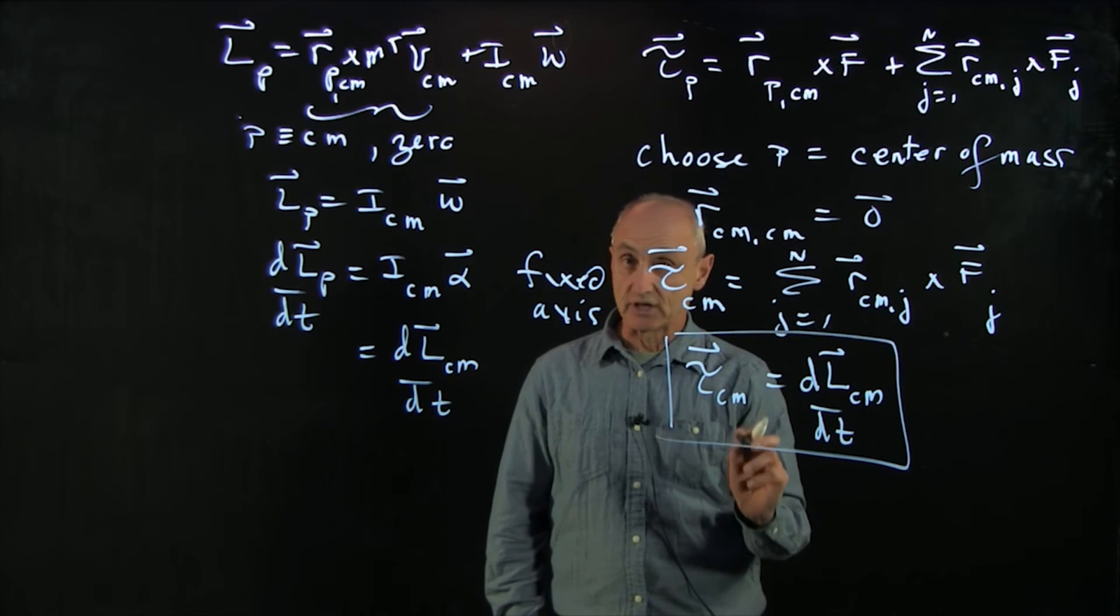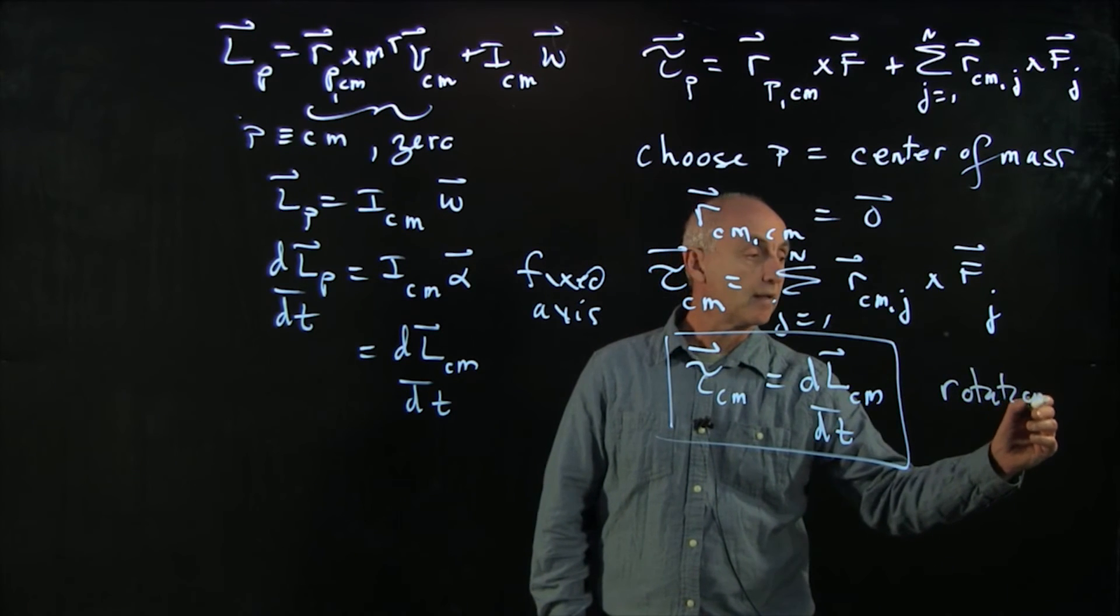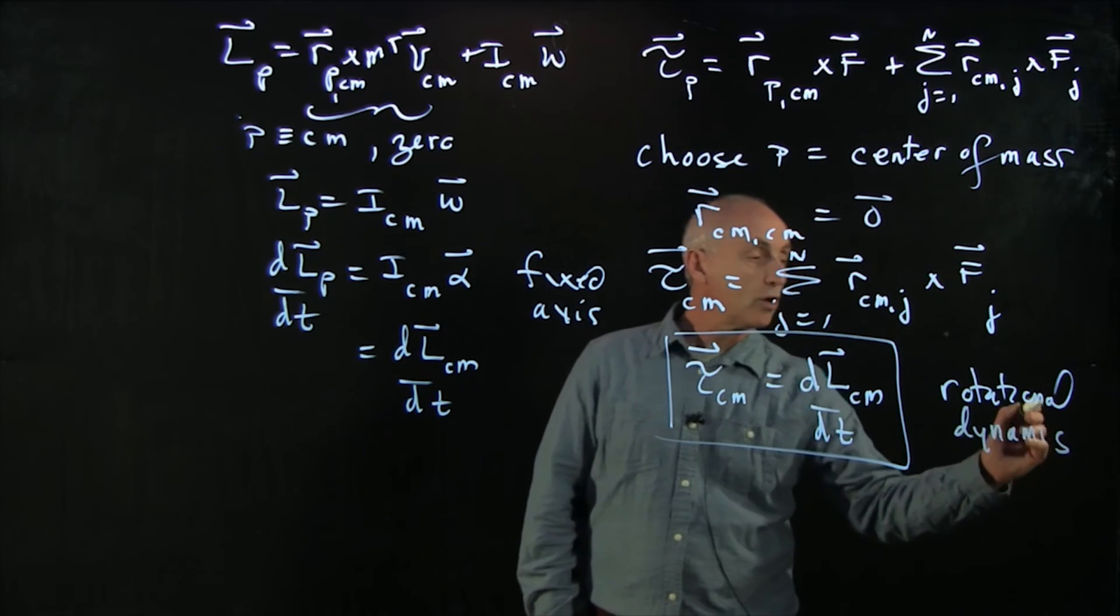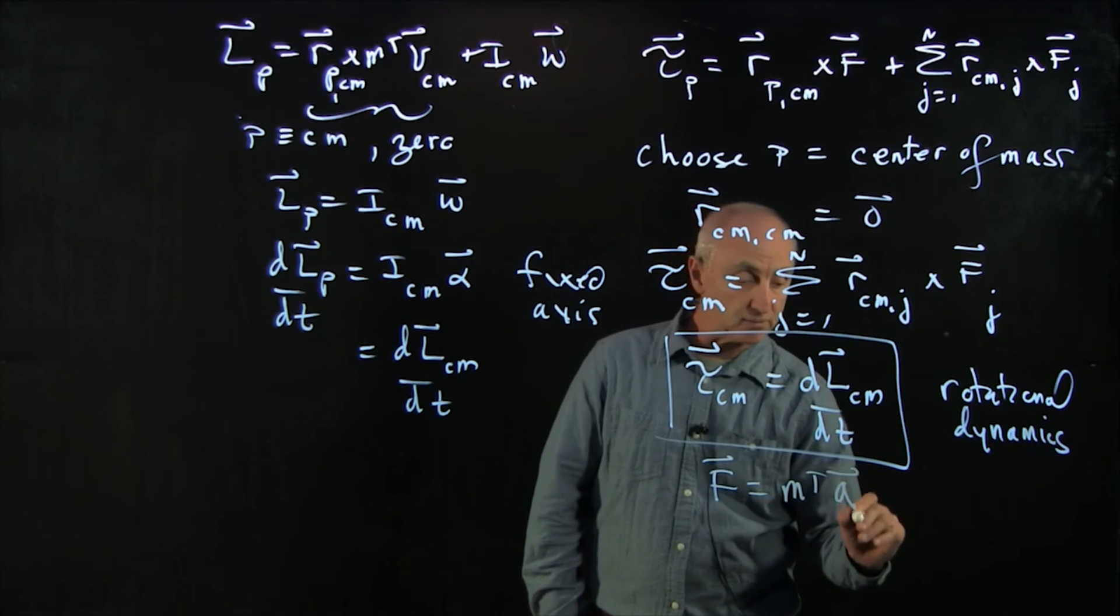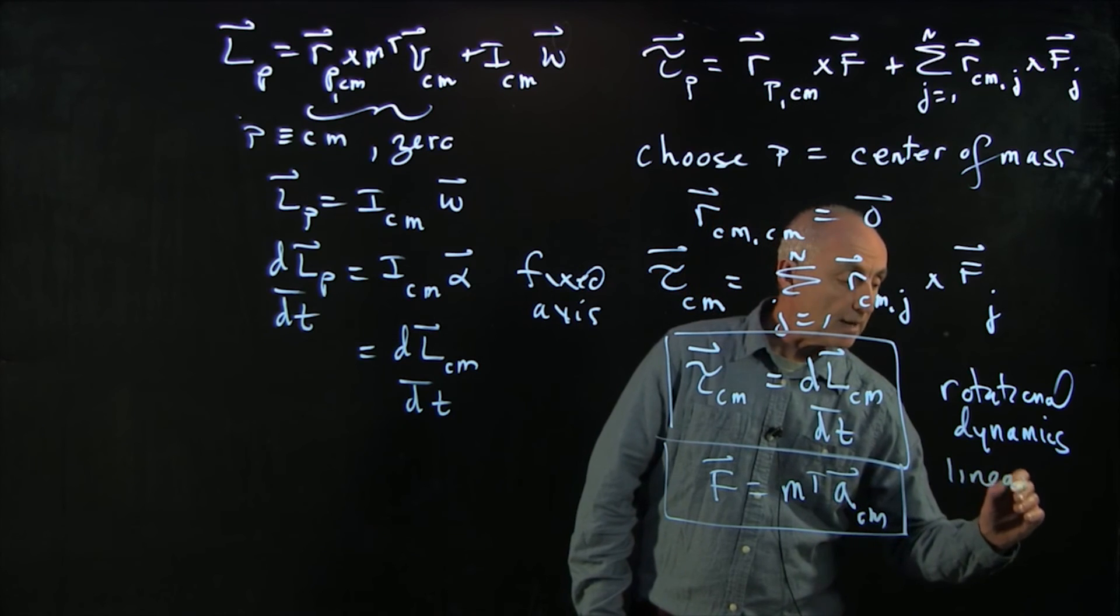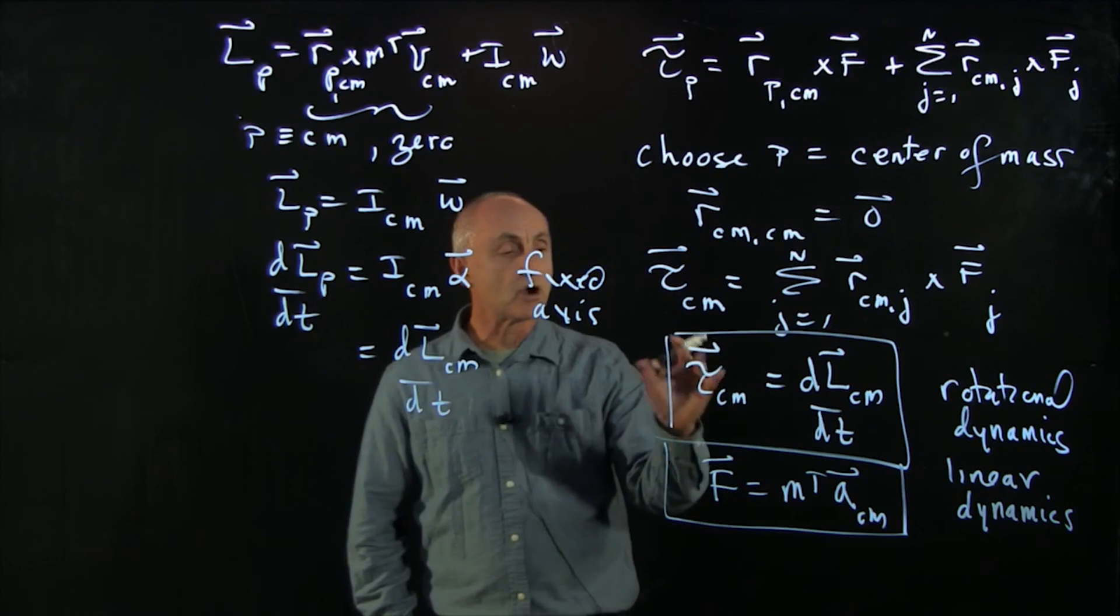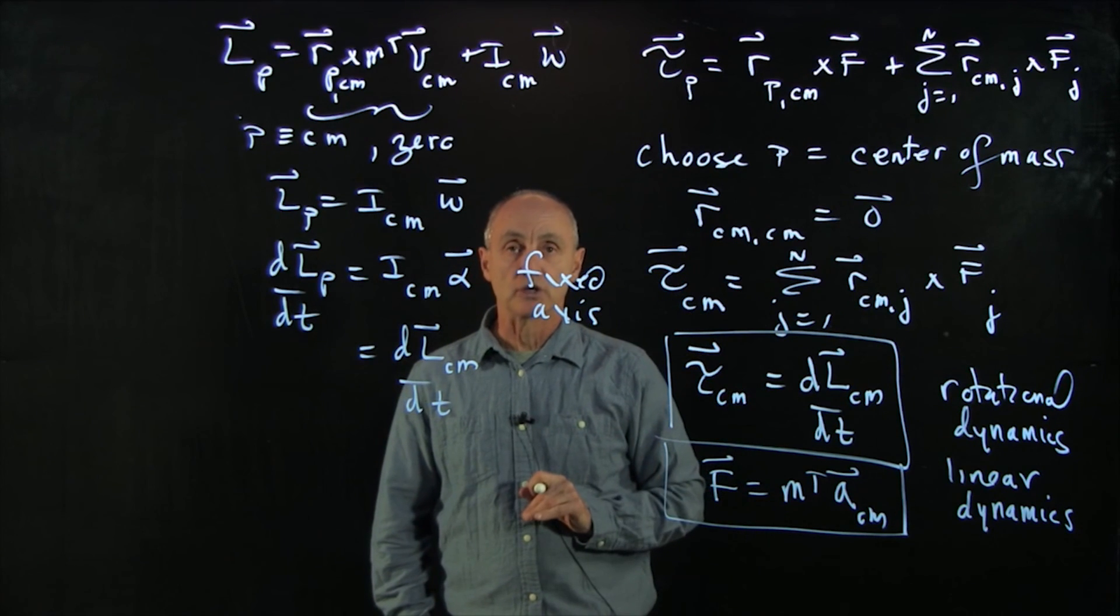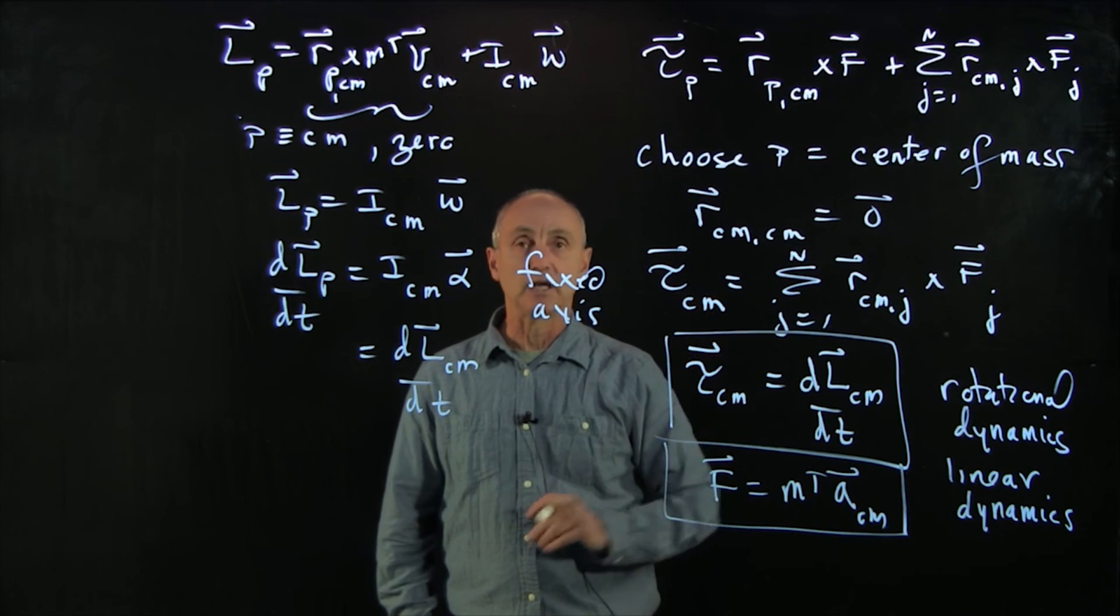And then for the center of mass motion, so this gives us our rotational dynamics. And for our linear dynamics, we will still apply F equals the total mass times a_CM. So that's our linear dynamics. And this is our overall decomposition of rotational motion. To analyze it, we study the rotational dynamics and the linear dynamics.